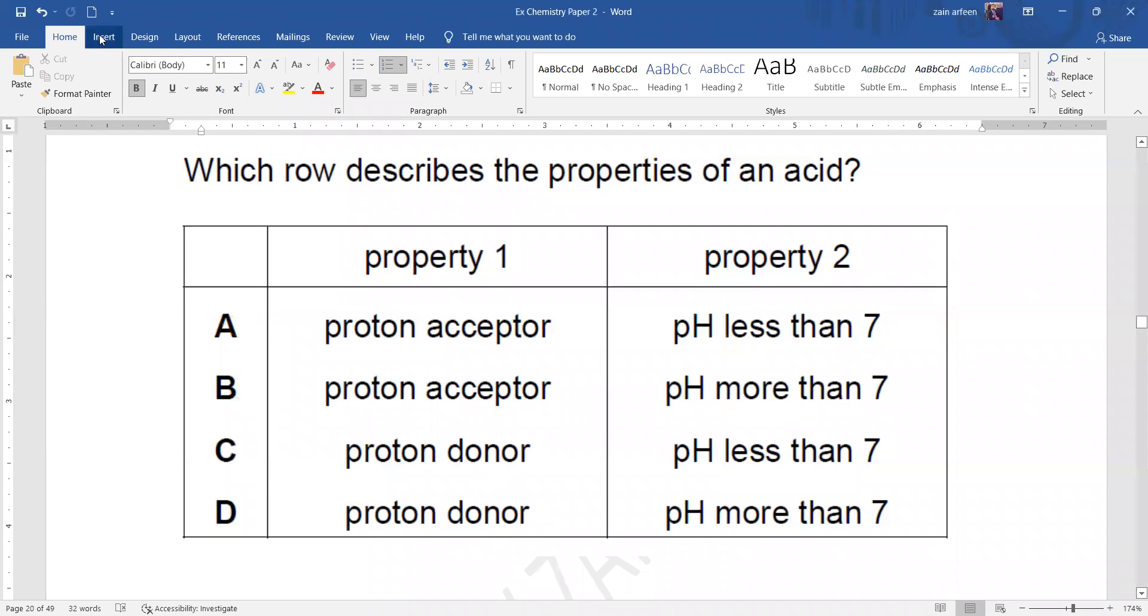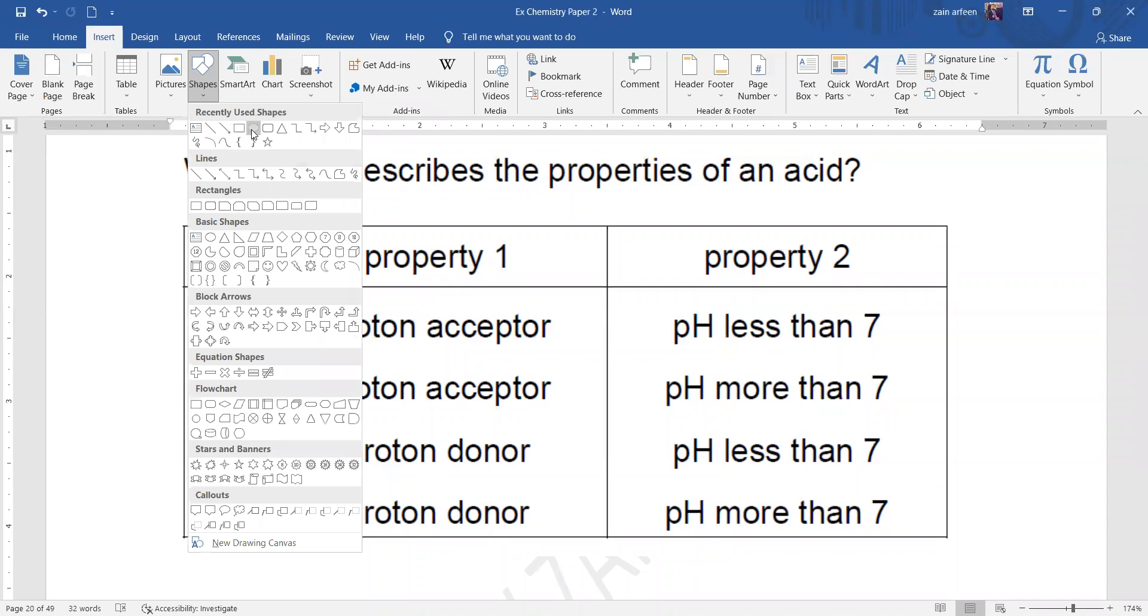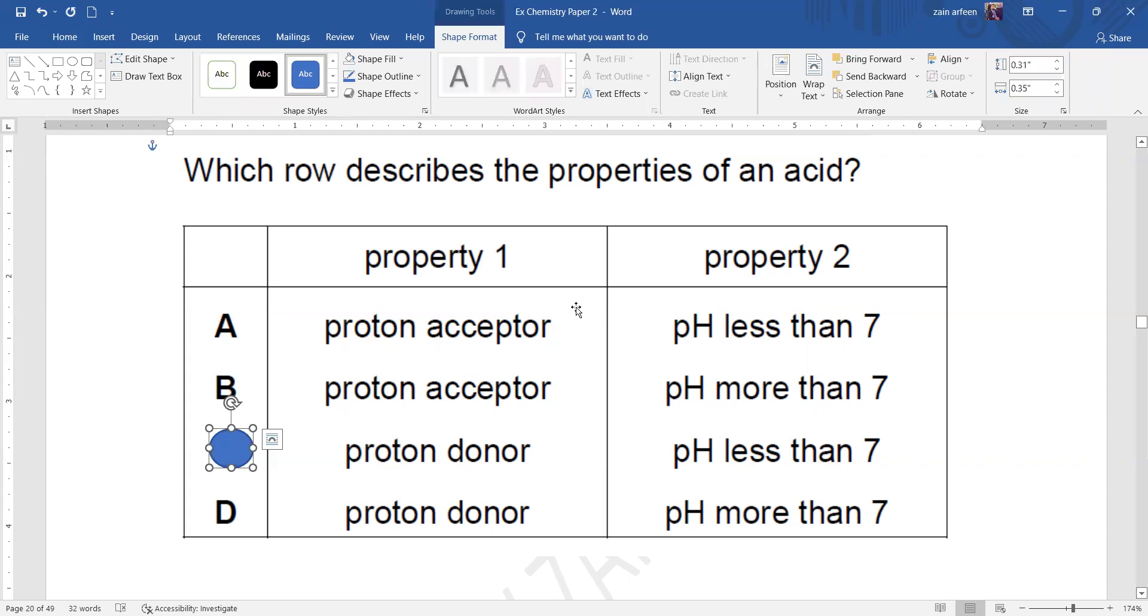So acids are proton donors, donate protons, and they have the pH, power of the hydrogen ion, that is less than 7. So C will be the right answer for this.